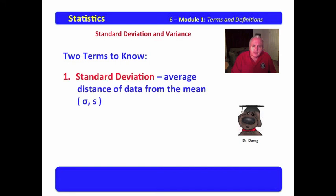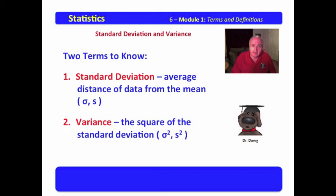These two terms you need to know are standard deviation, which is the average distance of data from the mean, represented by sigma for the population and S for the sample, and the variance, which is the square of the standard deviation, represented by sigma squared and S squared. The variance of the population is sigma squared. The variance of the sample is S squared. Now you know all.